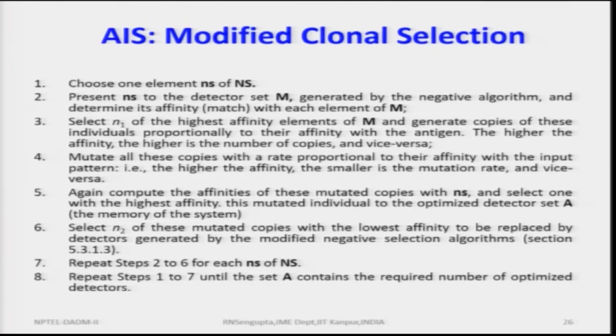Select the n1 highest affinity cells from M and generate copies proportional to the affinity value — higher affinity means more copies generated, lower affinity means fewer. This is analogous to the body being attacked by germs: when flu or other pathogens attack, antibodies are generated in greater numbers based on the lock-and-key concept to fight the virus.